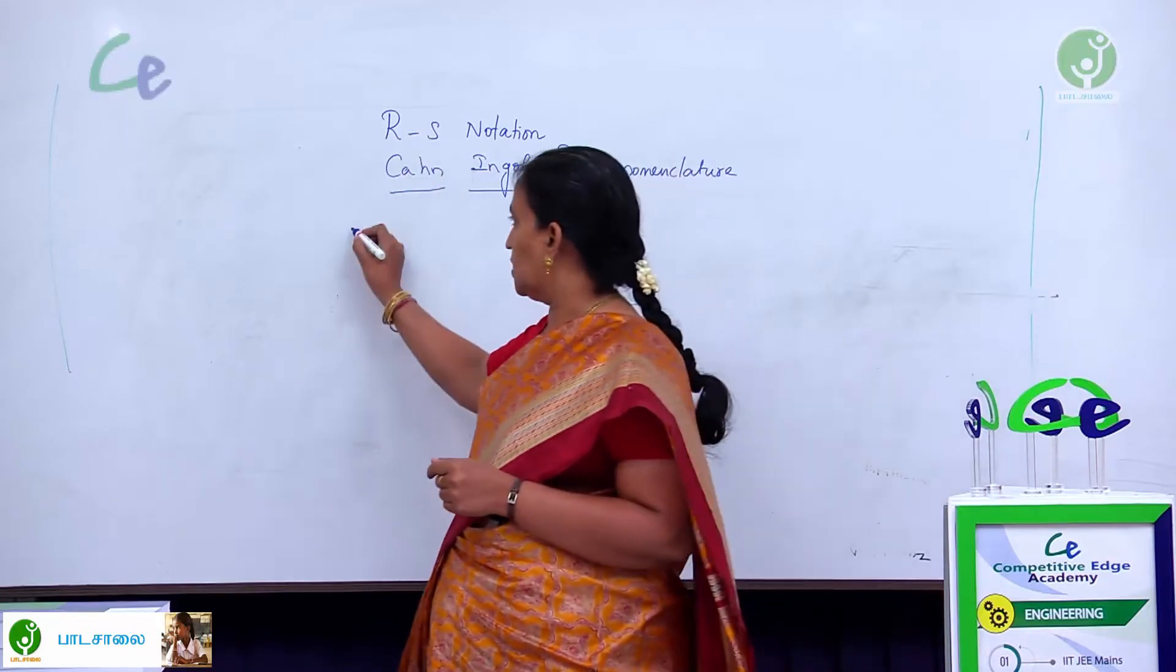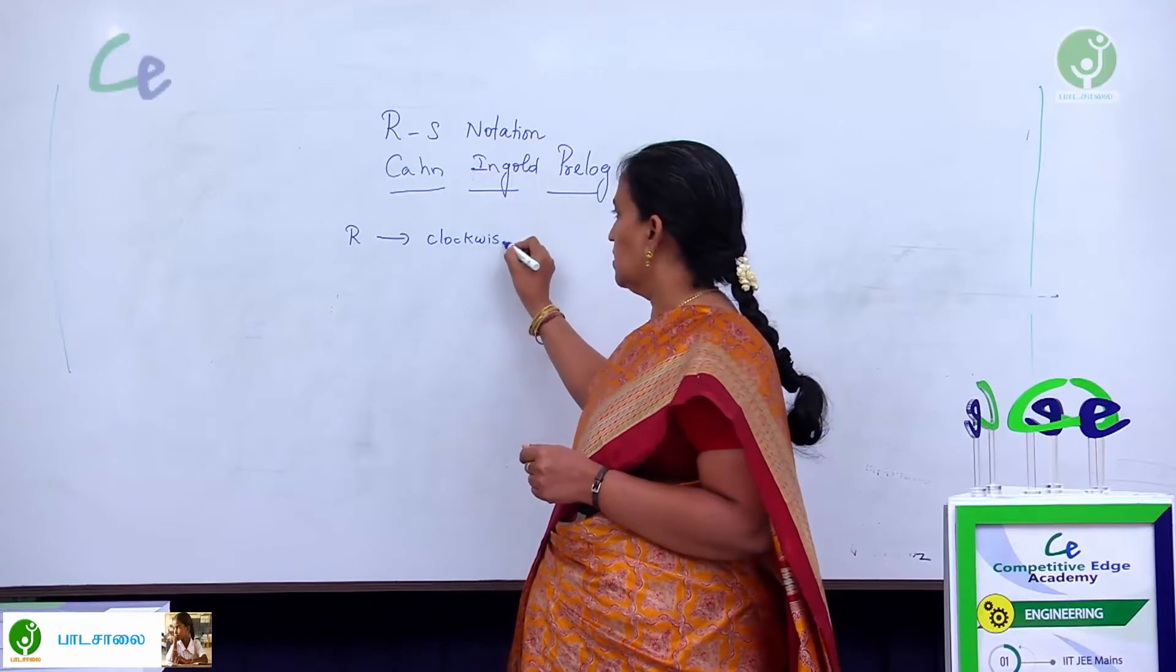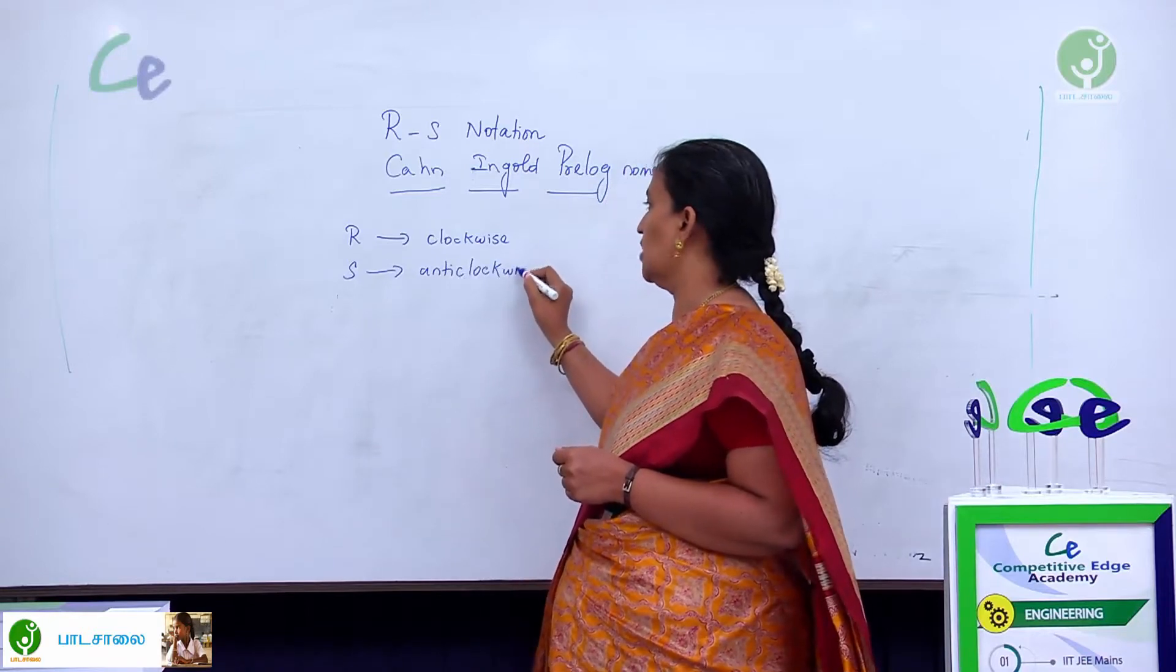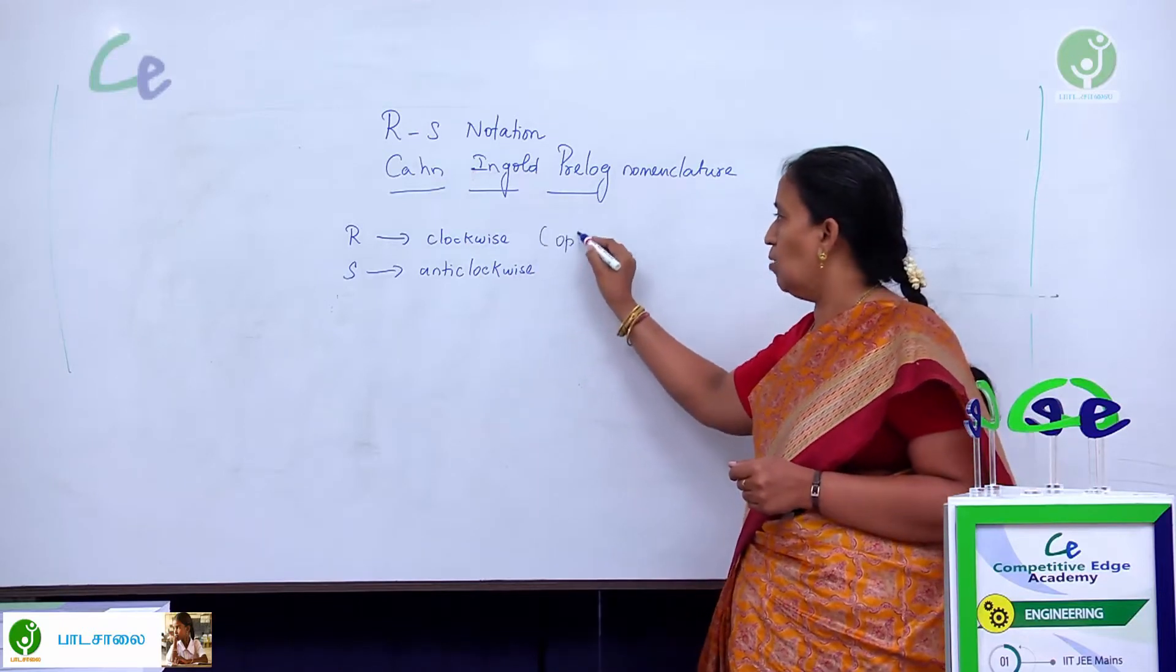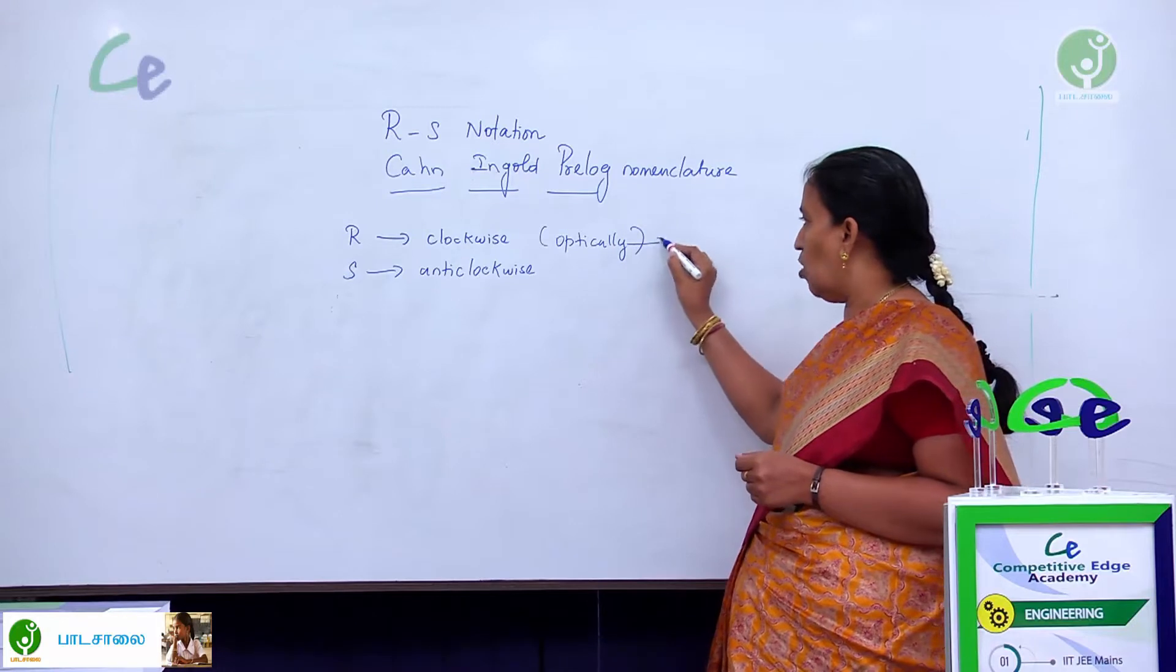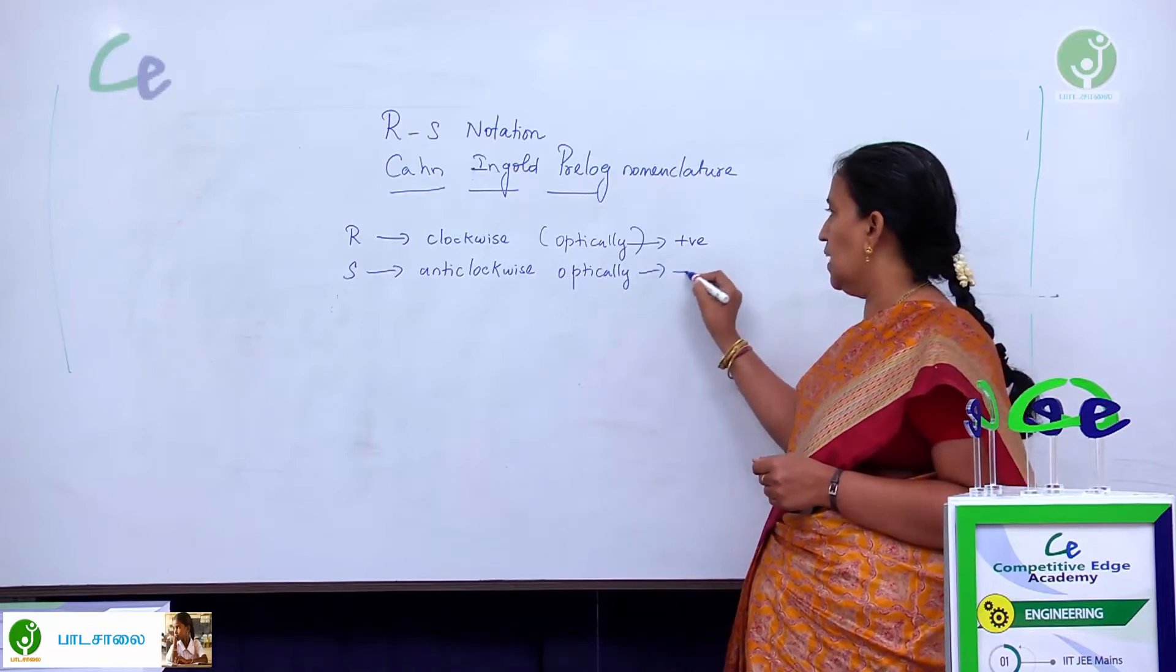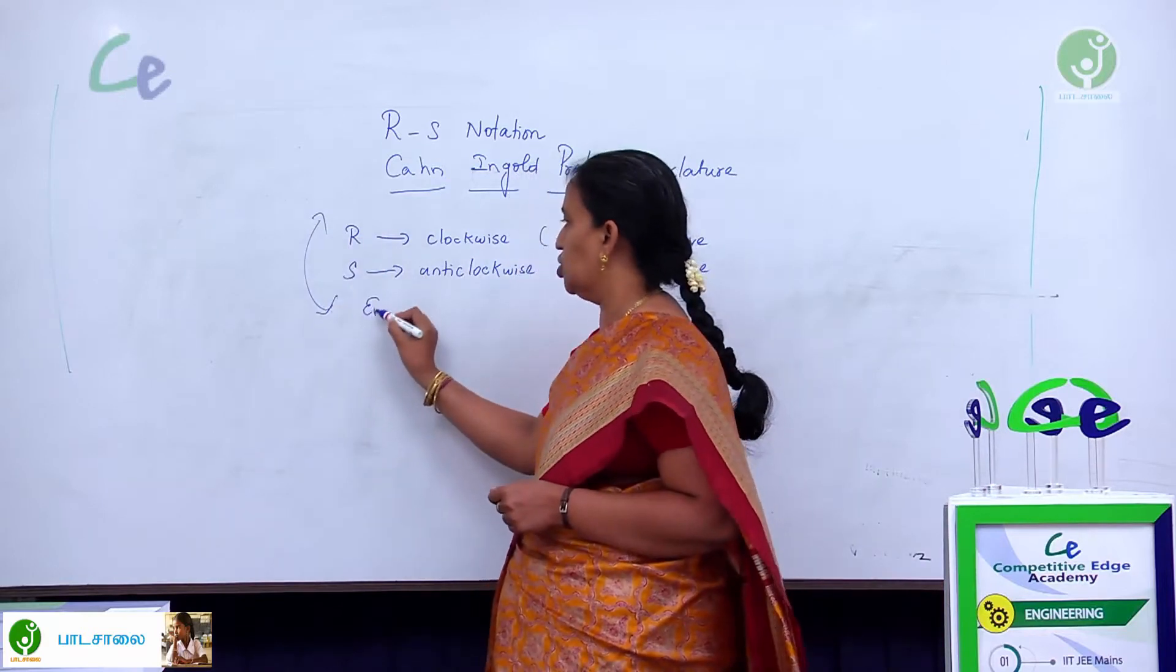What does R represent? If the system is clockwise rotation, then it is R. If it is anti-clockwise then we are saying that it is an S notation. The R clockwise systems are called optically active systems. If this is optically positive isomer then the S notation is optically negative rotation. So, we can call these two as enantiomers.